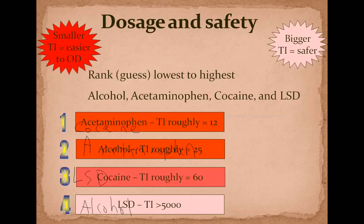Alcohol's therapeutic index is 25 — meaning you can take 25 times the effective dose before you reach the LD50. Because alcohol is legal, most people would assume cocaine is more dangerous, but alcohol is actually twice as likely to cause an OD as cocaine. And don't think you can drink 25 beers in a row safely — at the LD25 level, you already have a 25% chance of dying. That number is even lower at LD25, so be aware of that.